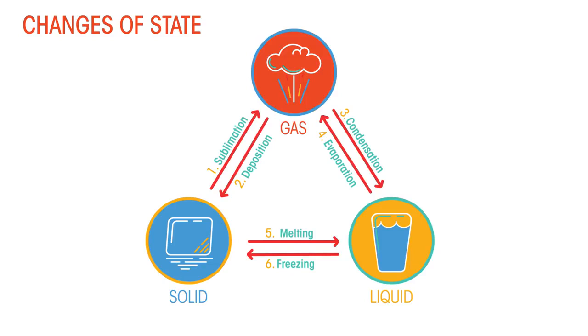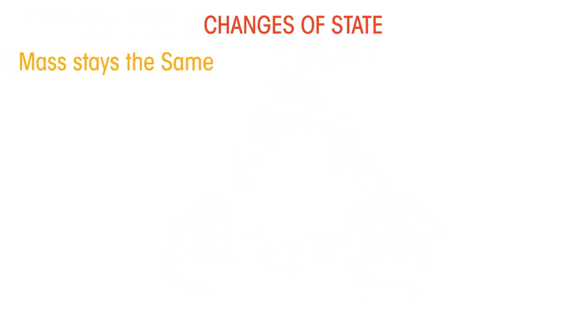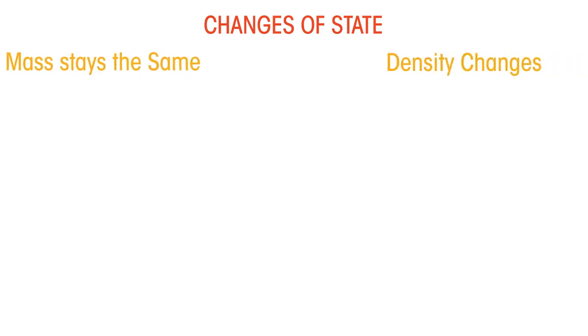Our final thing to discover is that when a material changes states, the mass stays the same. The density changes, so the mass per unit volume, but the mass does not change.